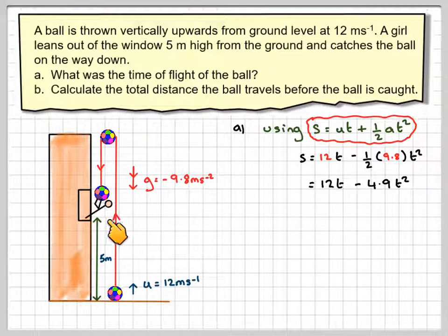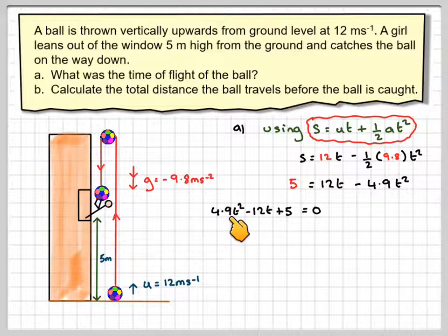Now we want to know the time when the displacement is 5, but we'll get two values of t, one when it goes up and then one when it goes down. So putting that equal to 5 and then solving it, make it into a quadratic equation: 4.9t squared minus 12t plus 5 is equal to 0.